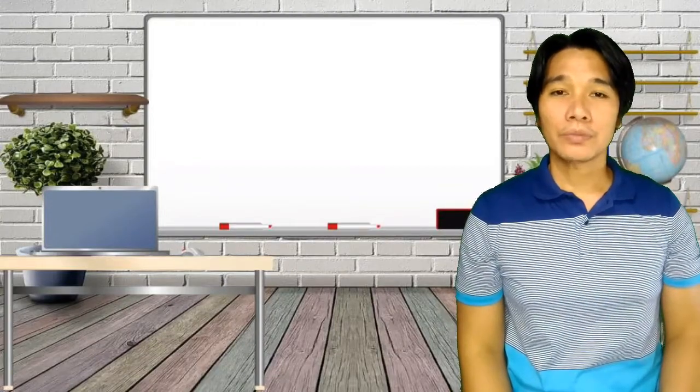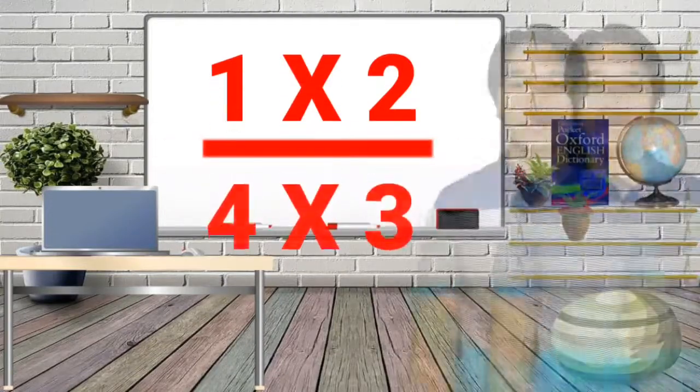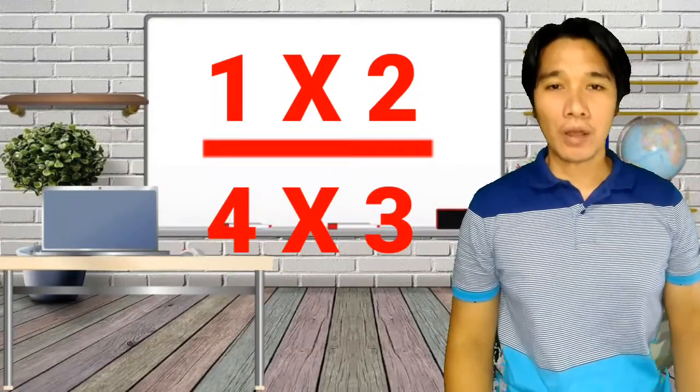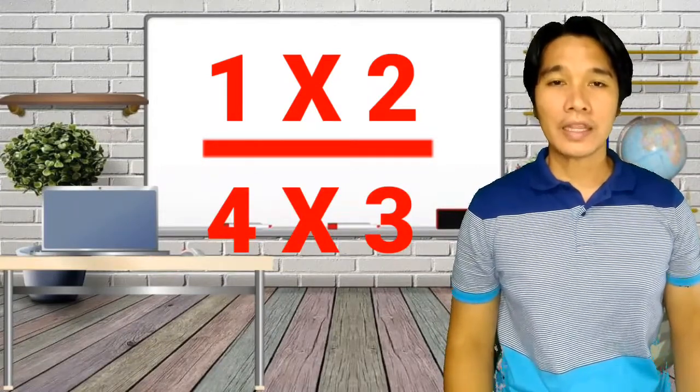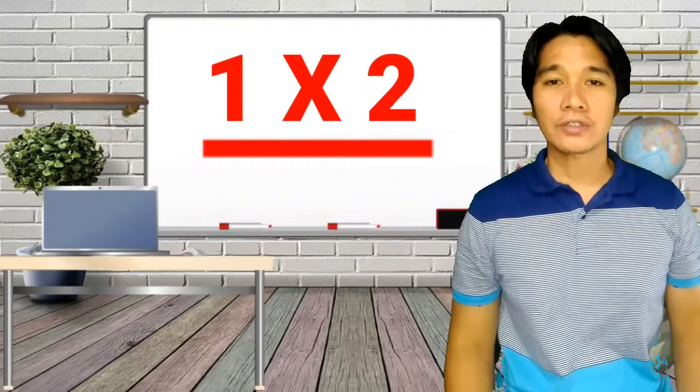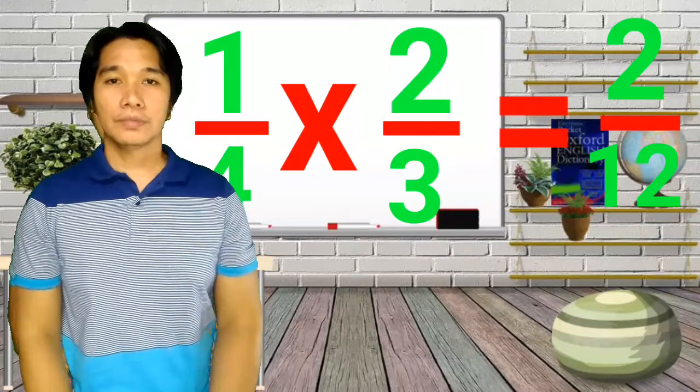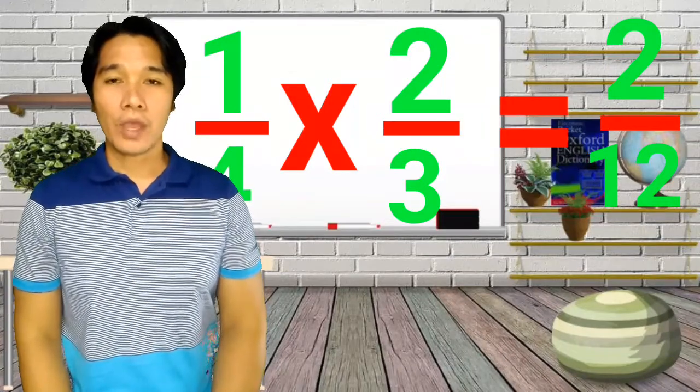Now, it looks like 2 multiplication problems that are being divided and looks like a fraction. In fact, we go ahead and do the multiplication: 1 times 2 is 2 and 4 times 3 is 12. Then, we have a fraction and it's the answer to our problem. So, what does it mean?